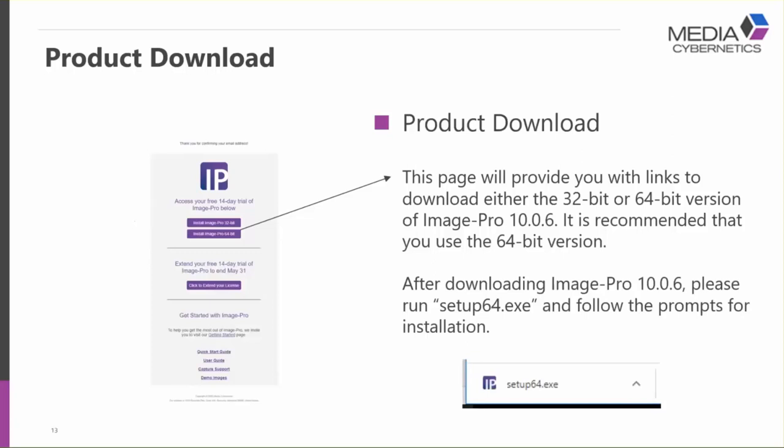The first decision is which version of Image Pro 10 to download — we offer 32-bit and 64-bit. The preferred version is 64-bit. We maintain a 32-bit version for some older legacy applications, but it's not very popular, and unless you have a specific need for 32-bit it's recommended you use the 64-bit installer. After clicking on it, you'll see a download icon in your browser labeled setup64.exe — simply run that and follow the installation prompts to install Image Pro 10.